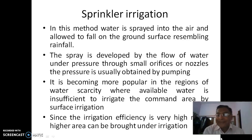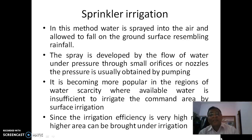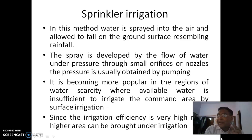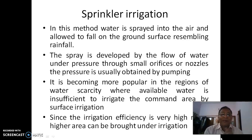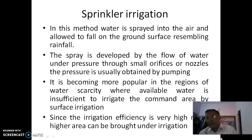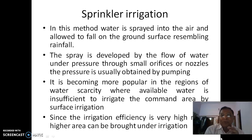In the sprinkler irrigation method, water is sprayed into the air and allowed to fall on the ground surface, resembling rainfall. We are creating a controlled water spray, almost like rainfall. The spray is developed by the flow of water under pressure through small orifices, also called nozzles — orifices or nozzles. The pressure is usually obtained by pumping.